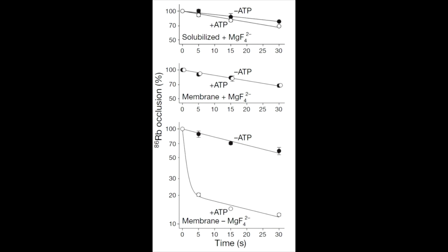The middle graph is in the presence of magnesium tetrafluoride and shows that the occlusion is the same in both the presence and absence of ATP. These findings prove that magnesium tetrafluoride stabilizes the ATPase in one state, a necessity for crystallization.